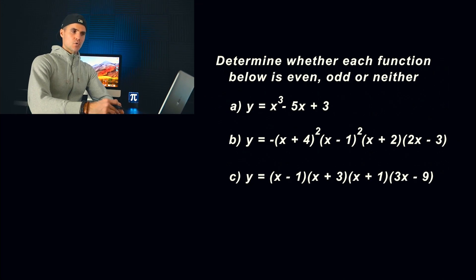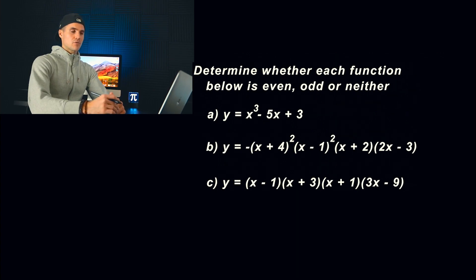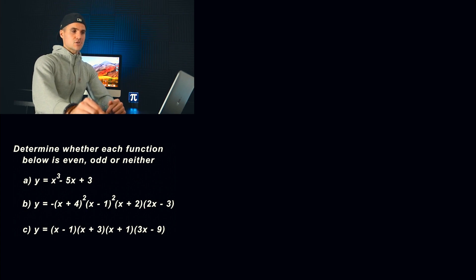What's up everyone? Welcome back. Patrick here. Moving on to the next example dealing with polynomial functions in advanced functions. What we have to do is find the symmetry of these functions — are they going to be odd, even, or neither? Starting off with part A, we have f of x equals x cubed minus 5x plus 3.